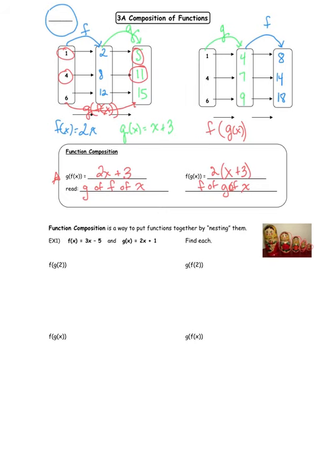So if I want to do f of g of 2, that means I begin by putting the 2 into the function g, and then take that result and put it into the function f. I start with the innermost function, g of 2 — I replace x with 2 in g of x, which is 2x plus 1. So that becomes 2 times 2 plus 1, which is 4 plus 1, that's 5. That becomes f of 5. Now I plug 5 into f, which gives 3 times 5 minus 5, that's 15 minus 5, giving us an answer of 10.